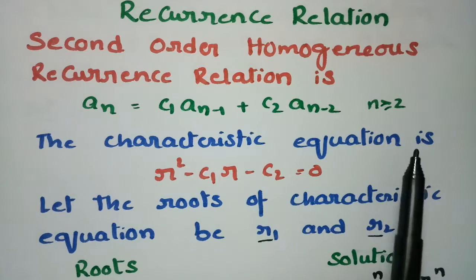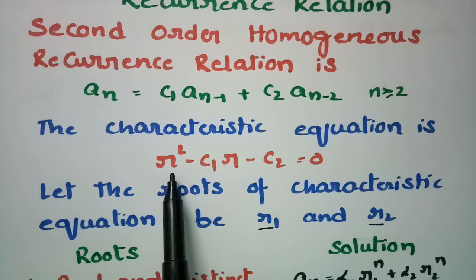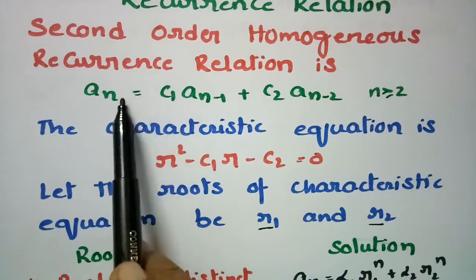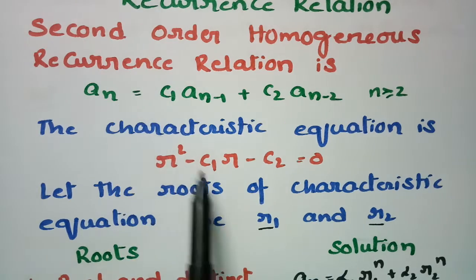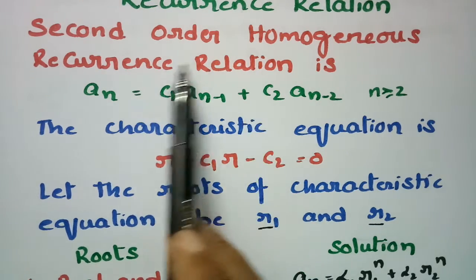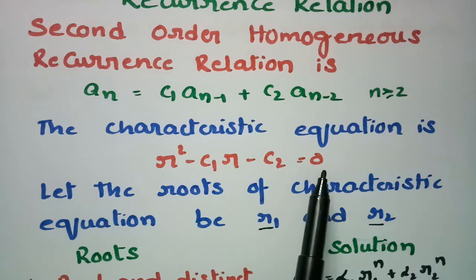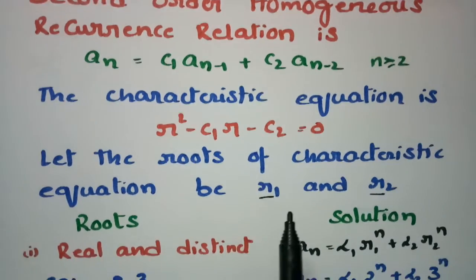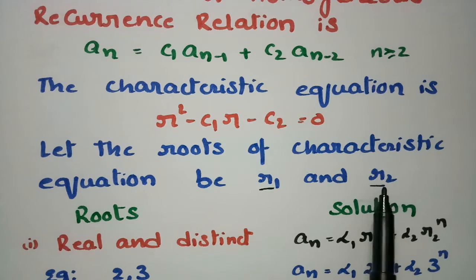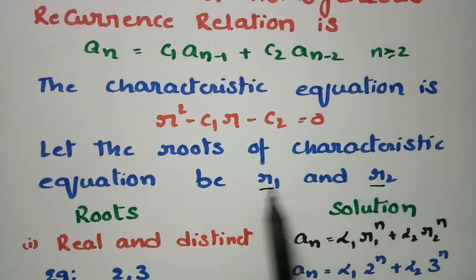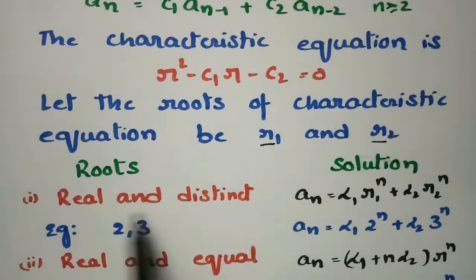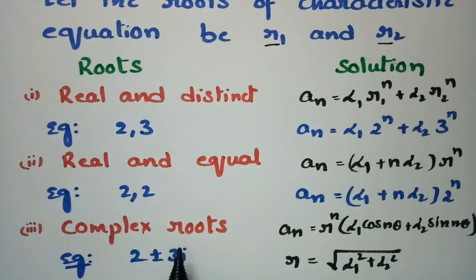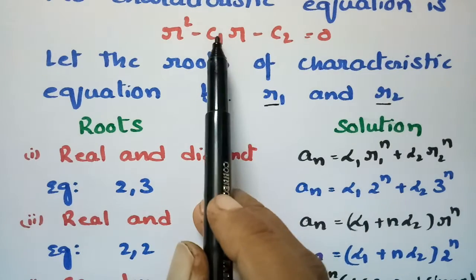First, we write the characteristic equation. Since it is of second order, the characteristic equation is R² - C1·R - C2 = 0. Solving this equation gives roots R1 and R2, which might be real and distinct, real and equal, or complex roots. There are three cases after solving this equation.